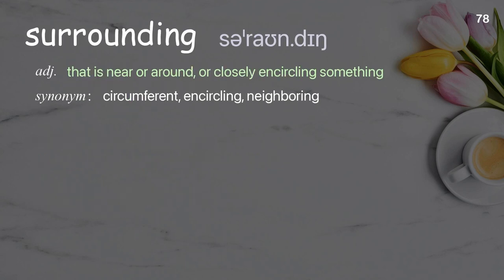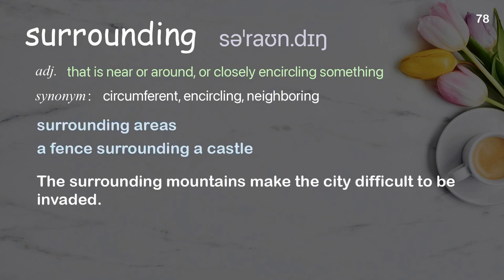Surrounding: That is near or around, or closely encircling something. Examples: Surrounding areas, A fence surrounding a castle. The surrounding mountains make the city difficult to be invaded.